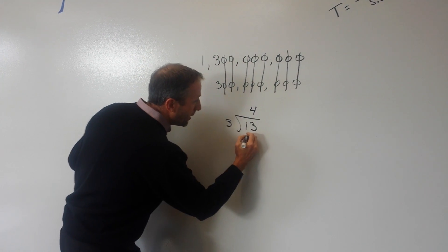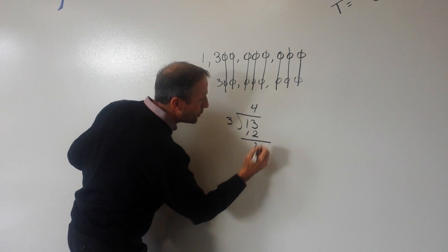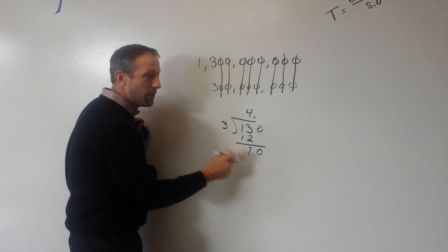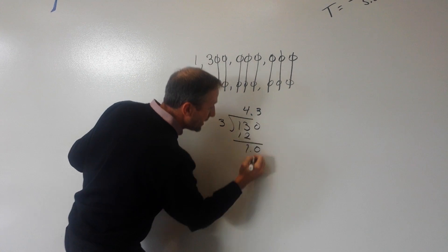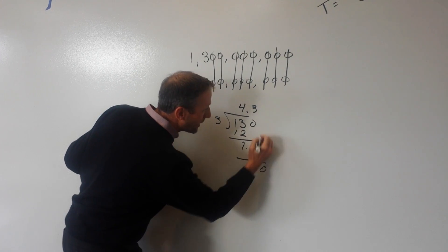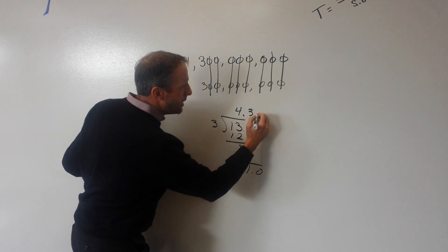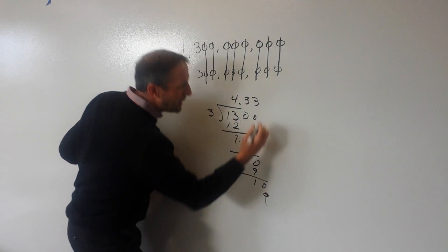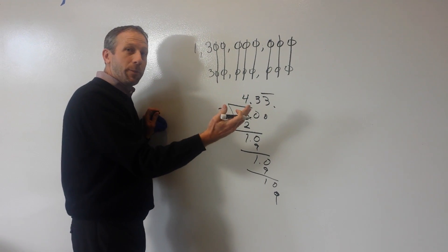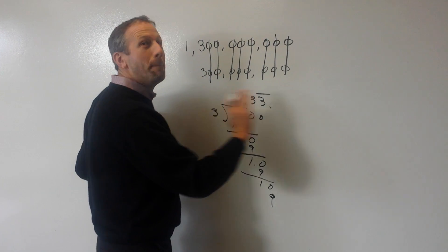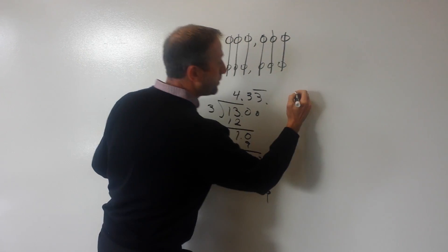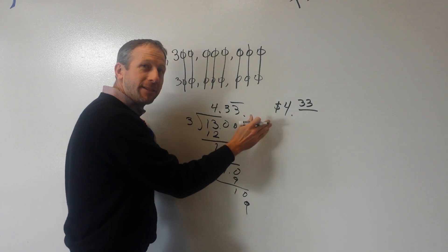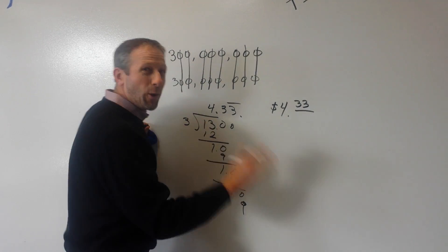4 are there. 3 times 4 is 12. That leaves me with 1. I'm going to put a decimal point. I'm going to carry down my 0: 1.0. 3 goes into 10, 3 times gives me 9. Subtract that out. Again, I'm going to carry down another 0. It's going to be a 3 again. You're going to see a trend here, right? This is going to keep happening. So what we end up is what mathematicians would call 4.3 repeating. If you put that into dollars, $4.33, not 4 million, not 400,000, not even 4,000.